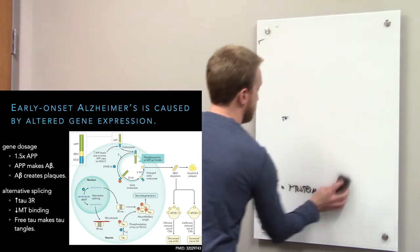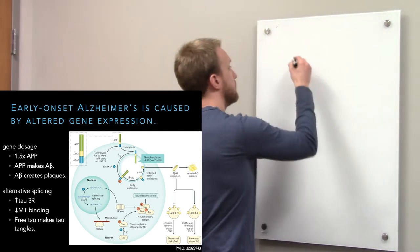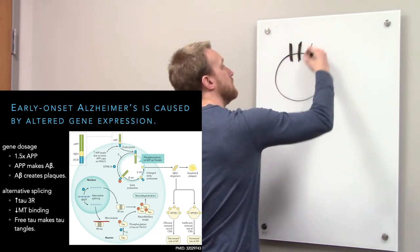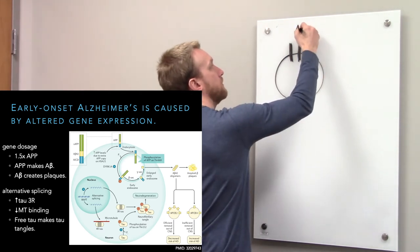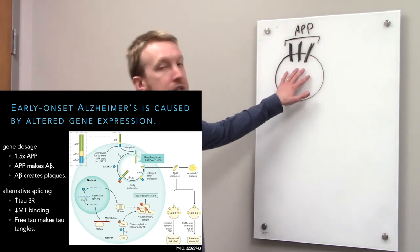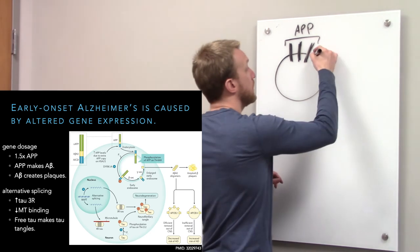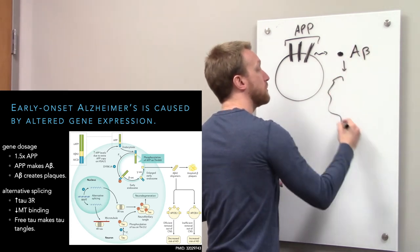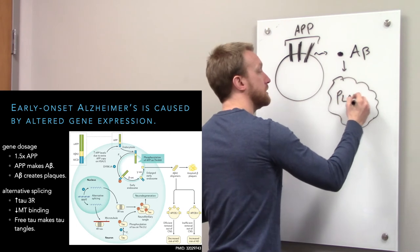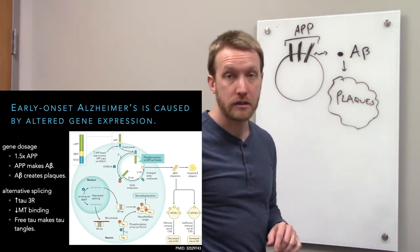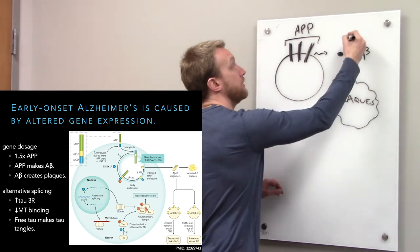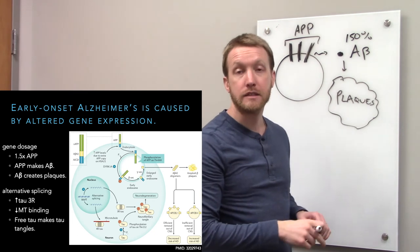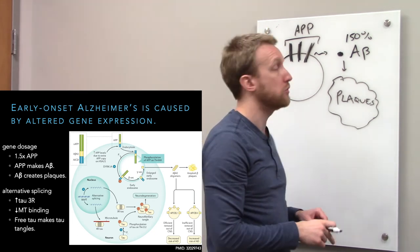If we have an extra copy of chromosome 21, we're going to have a 50% increase in the amount of amyloid precursor protein. This is just a protein that sits in the surface of cells, but relevant to Alzheimer's disease, this gets cut up to make a sticky protein called amyloid beta. This will eventually form those plaques that we see in Alzheimer's disease and in the brains of people with Down syndrome. They make 150% the amount of amyloid beta and thus rapidly develop plaques. That's why we'll see early onset Alzheimer's disease invariably in people with Down syndrome.